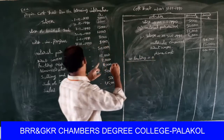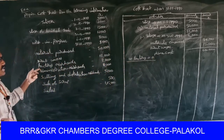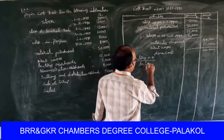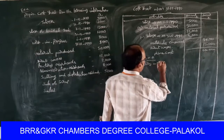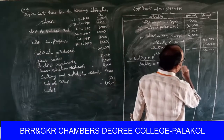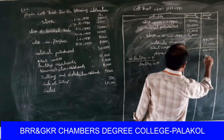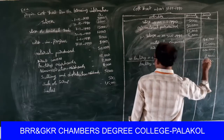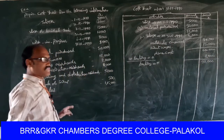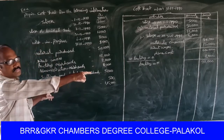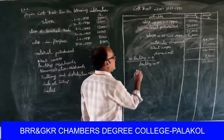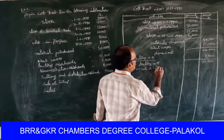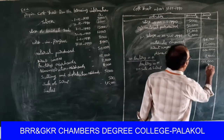Factory overheads — look at the board please. Factory overheads are eight thousand rupees. Adding to sixty-four thousand gives seventy-two thousand. Sale of scrap is five hundred rupees. This five hundred is deducted from seventy-two thousand because it is income, not expenditure.